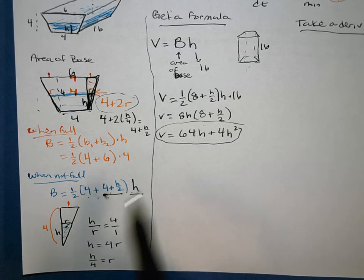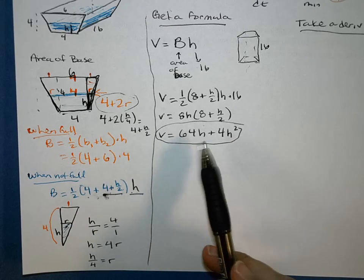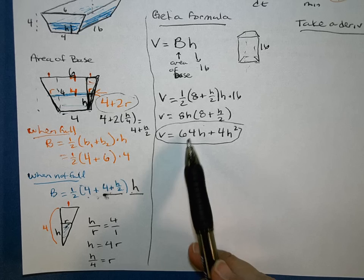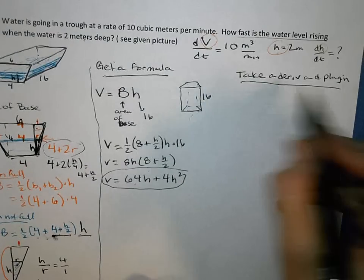That's what we were looking for. That should be the formula you actually can use on your homework. So on this homework problem, the most important thing to me is not you working for the formula. The important thing for me is once you have a formula, do you know how to find the rate of change in the water level? And how to find that is take a derivative and plug in.